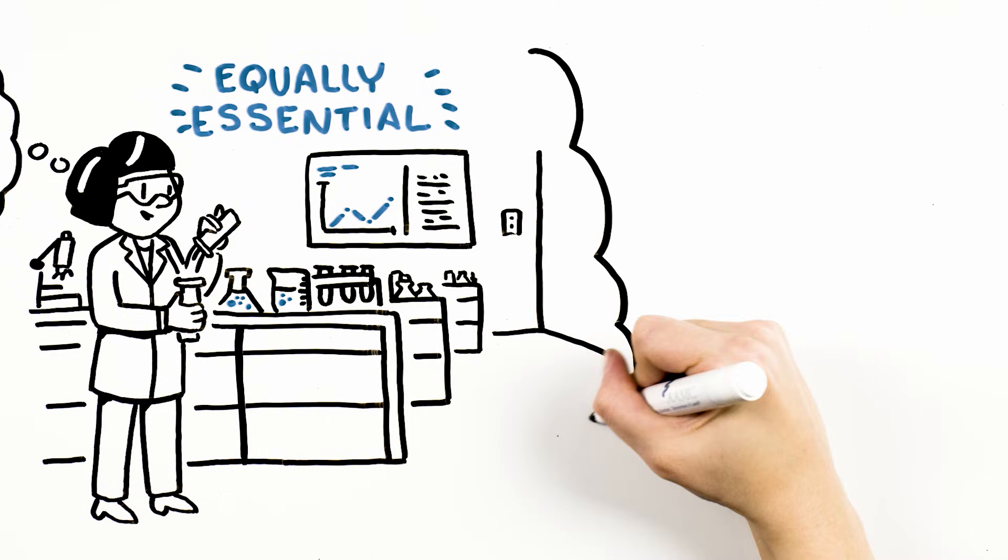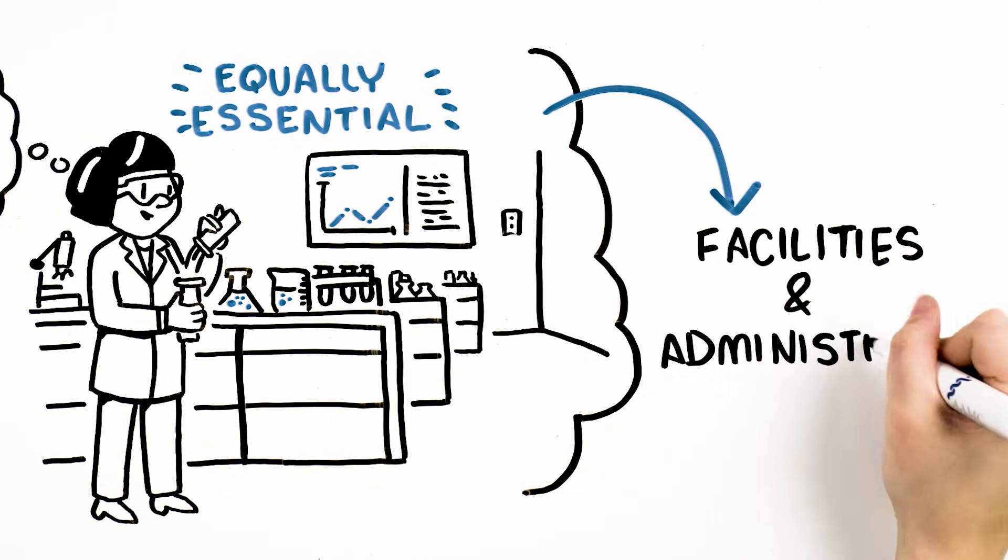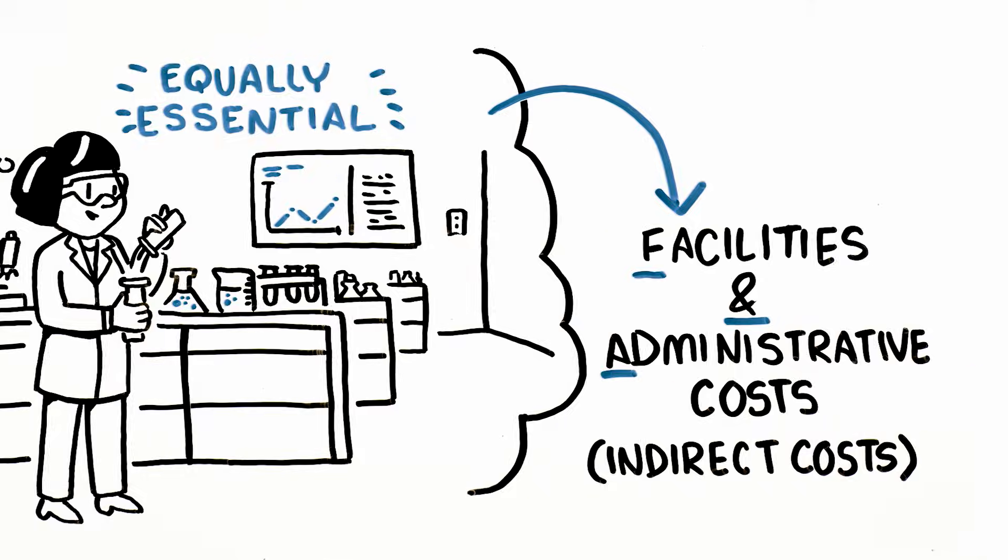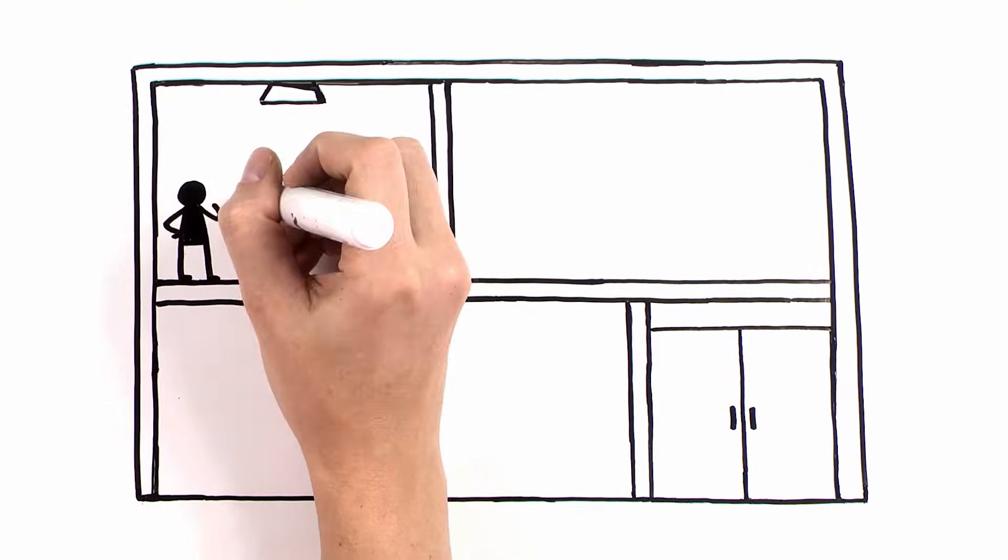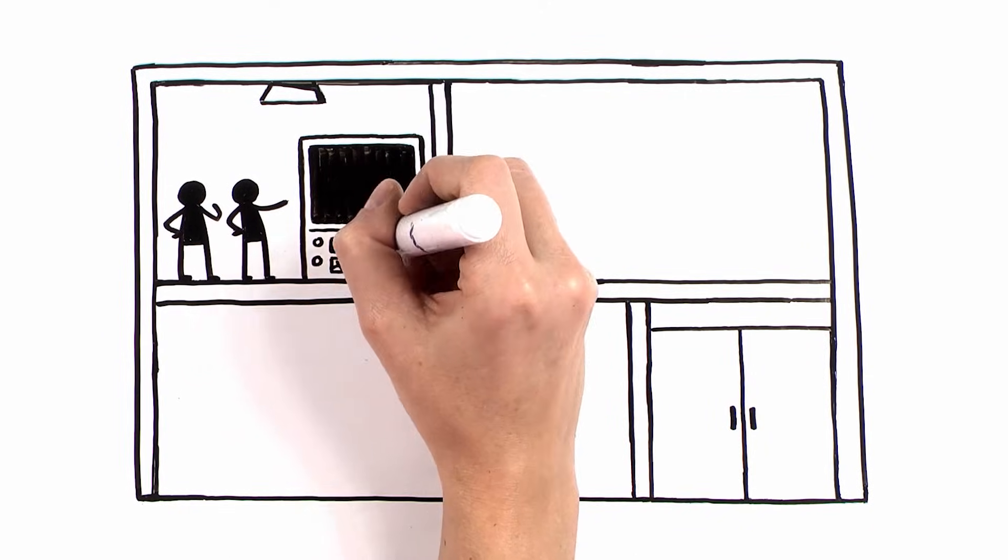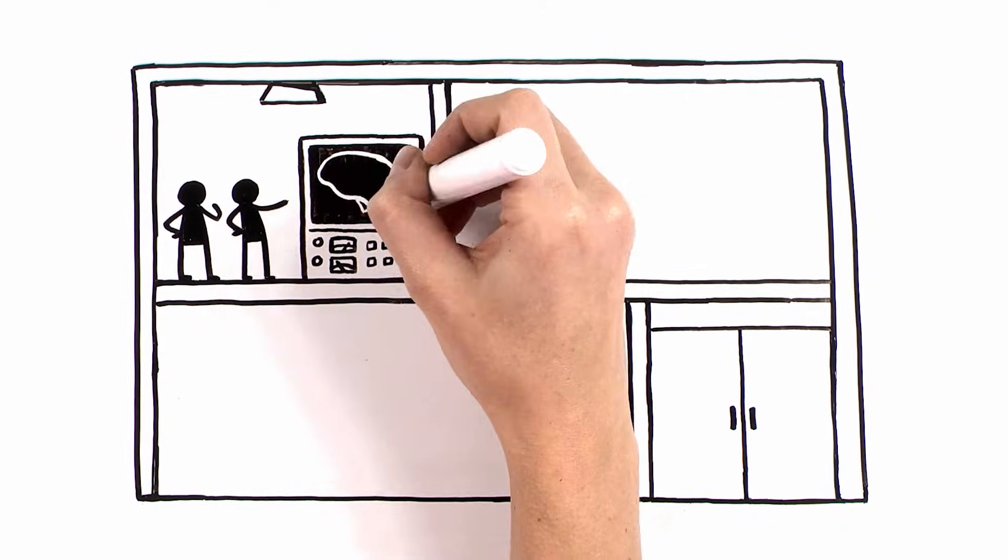These are equally essential research operating costs, also called F and A, or indirect costs. This funding helps pay for the cost of laboratories and other research-specific facilities provided by the institution and used for federally funded research.